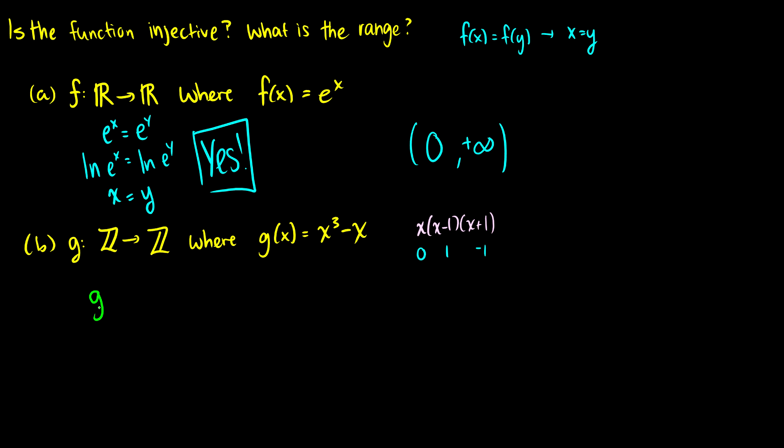Let's take a look at g(0), and let's take a look at g(1). So g(0) is going to be 0 cubed minus 0, and that's equal to 0, and g(1) is going to be 1 cubed minus 1, which is equal to 0.